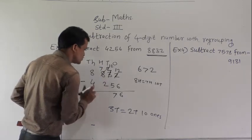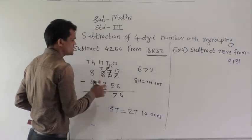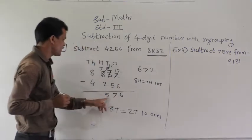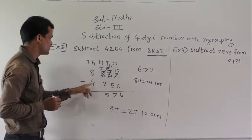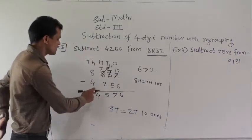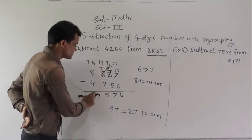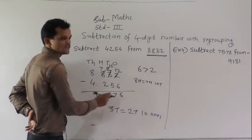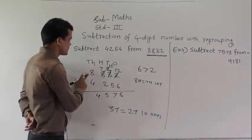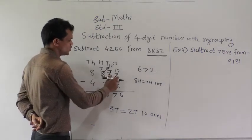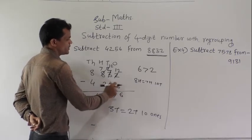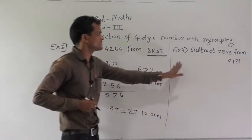Now 7 minus 2: 700 minus 200 means 500. And 8 minus 4 equals 4. So 4,576 is the difference between 8,832 and 4,256.